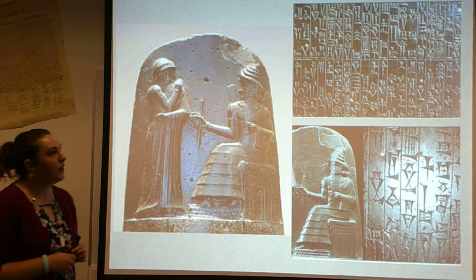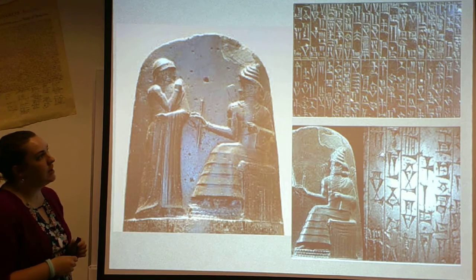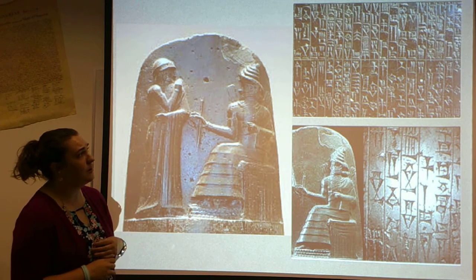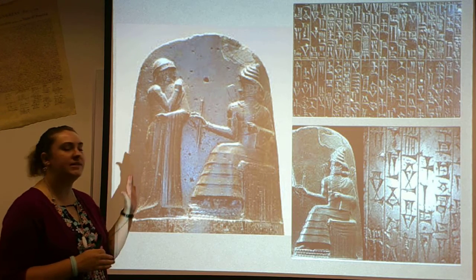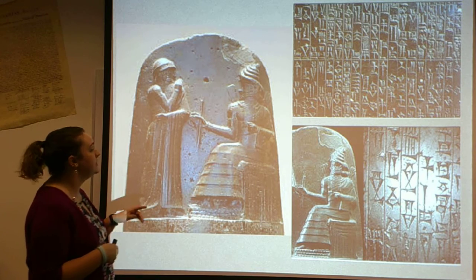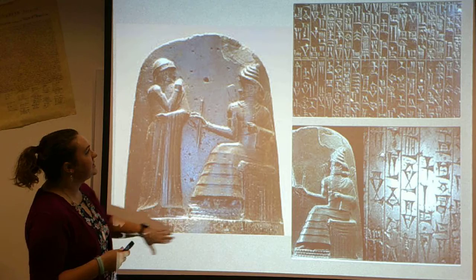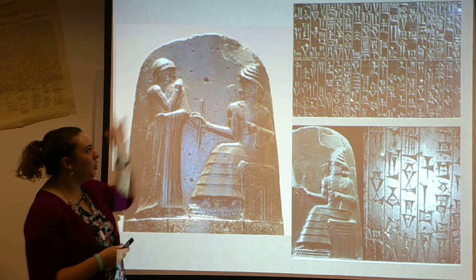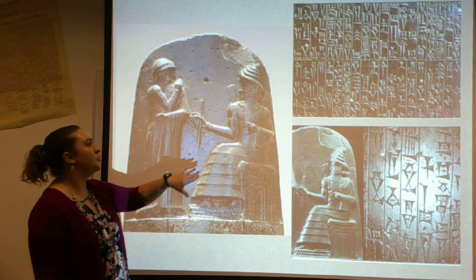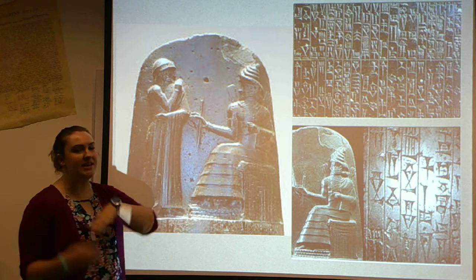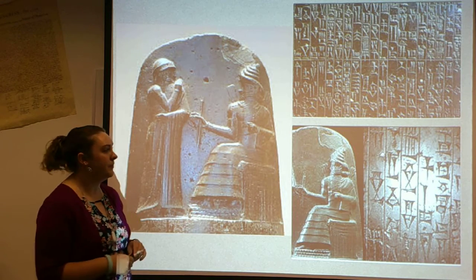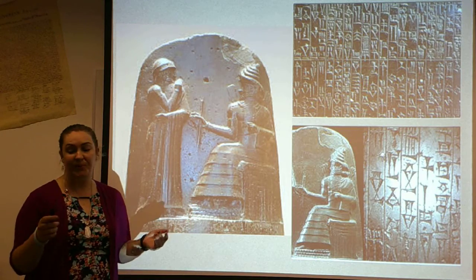Here are pictures of the Code of Hammurabi. It was written in cuneiform — you can see it's actually quite a beautiful language. All these slides are going to be posted on Schoology, so you'll have access to them. At the top, this is a sculpture of Hammurabi delivering his laws to a scribe that is writing them down for him. Pretty cool.